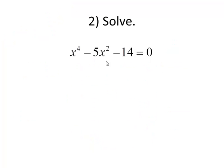Let's try this one, same idea, x to the fourth, x squared and a constant. Again, I'm going to let u equal x squared. My new equation will be u to the second minus 5u minus 14 equals 0. Again, I can solve this one by factoring. If you can't factor it, you can use quadratic formula, whatever you like.